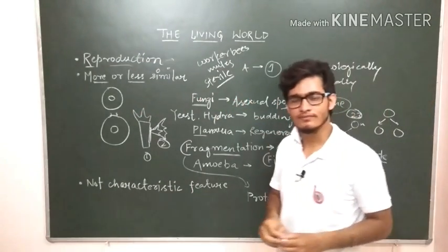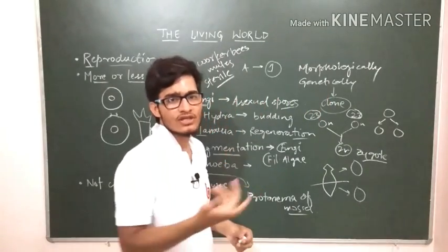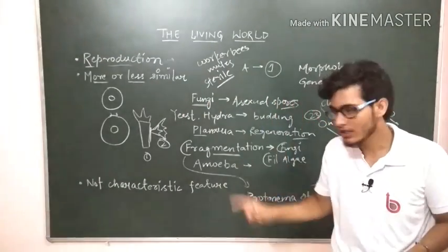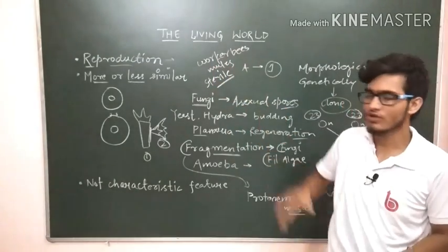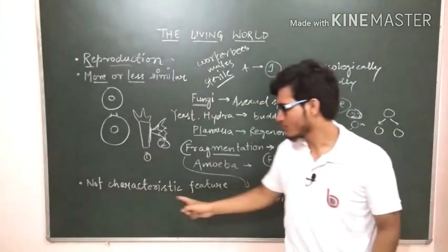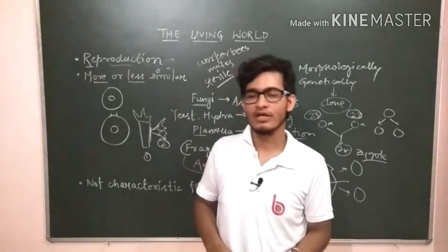Mules cannot reproduce and worker bees cannot reproduce, but they are living. So we cannot say that every living thing will reproduce because there are some exceptions. Due to these exceptions, reproduction is also not a characteristic feature of living organisms.